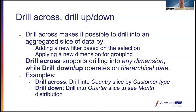The next features are called drill across and drill down or drill up. Drill down is essentially a subset of drill across. Drill across makes it possible to drill into an aggregated slice of data, changing the filters and group-by columns in the chart. In practice, this temporarily changes the chart metadata by adding a new filter based on the selection, and changing the group-by to correspond with the dimension the person wants to drill into. For the birth names dataset, one might want to see the distribution of births per state in the 'girl' slice.